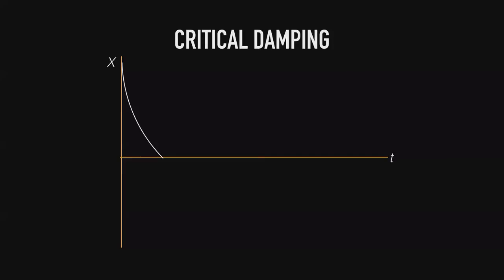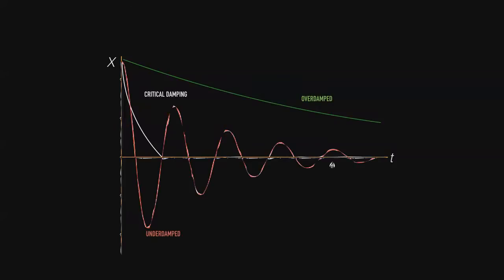So if we superimpose all these graphs together, here's what we get. We have our underdamped system, our overdamped system, and our critical damping system.